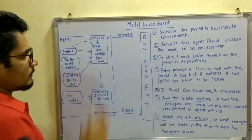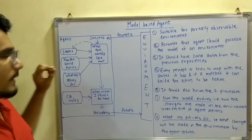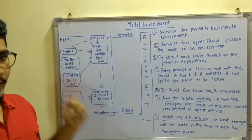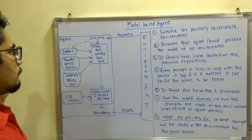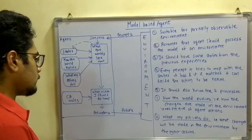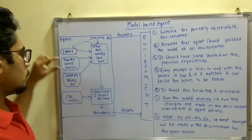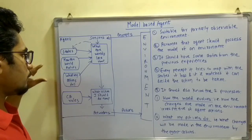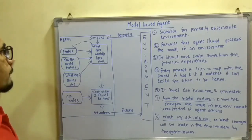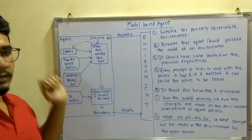Now we have talked about its states. There are two main background informations going into this. First is how the world evolves and what my actions do. These are the things related to additional background information along with states which are incorporated into the model based agent.